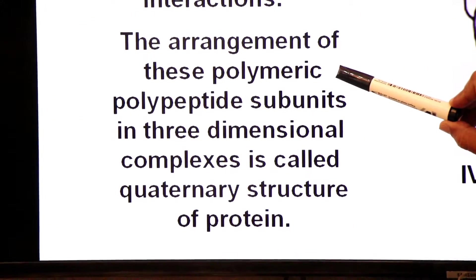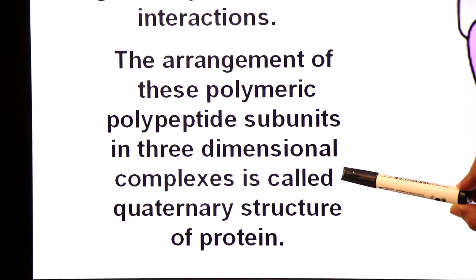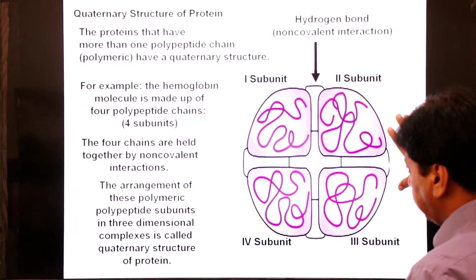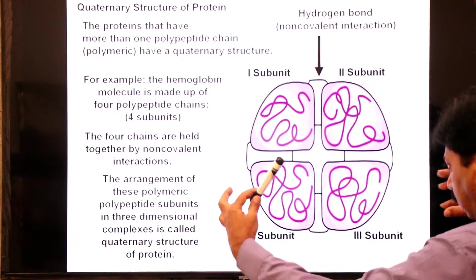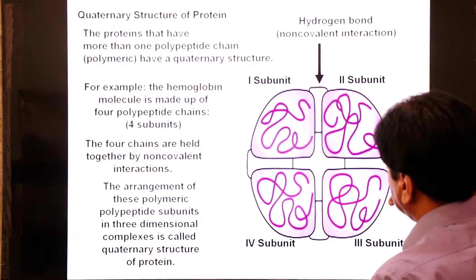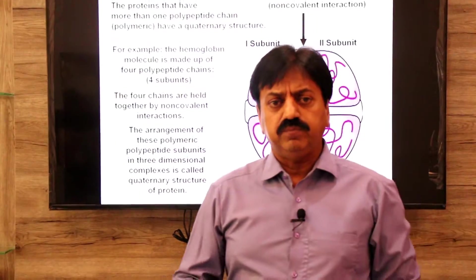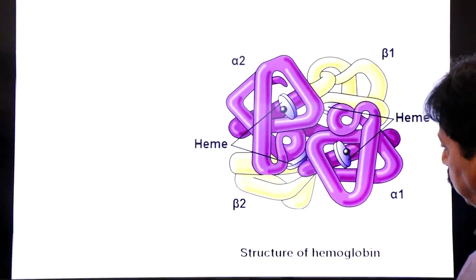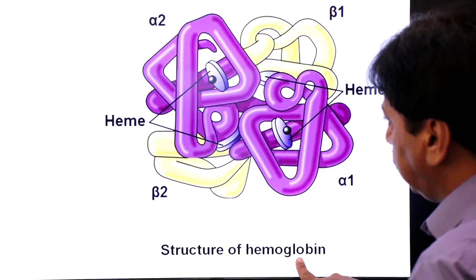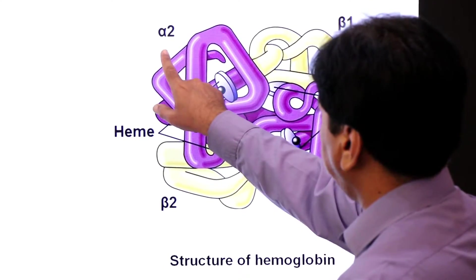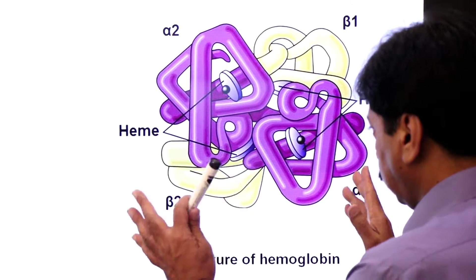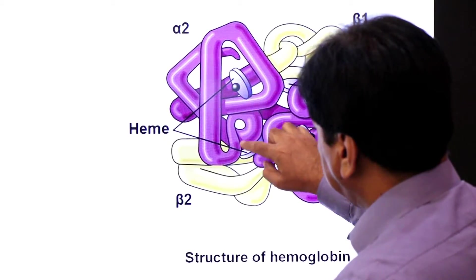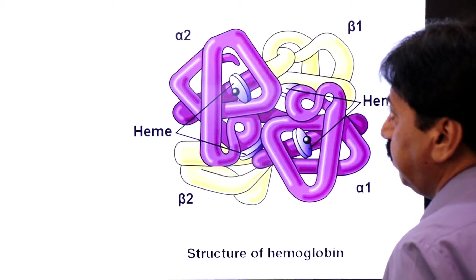The arrangement of these polymeric polypeptide subunits in three-dimensional complexes is called quaternary structure of protein. In hemoglobin, two are alpha chains and two are beta chains. Each unit contains one heme group which contains iron, and this is the binding site of oxygen — hemoglobin binds oxygen at the heme group.